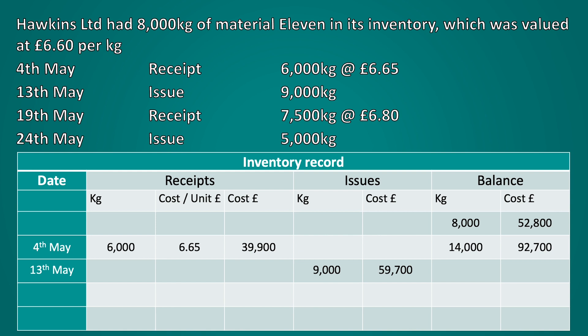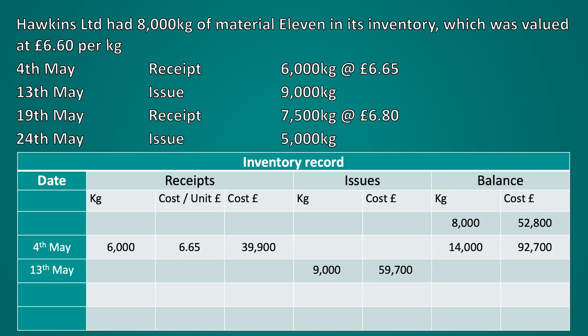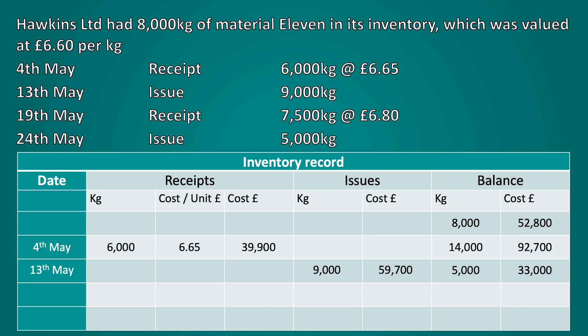We then calculate the remaining balance. Before the issue we had 14,000 kilograms and we've issued 9,000 kilograms, so the remaining balance is 5,000 kilograms. The value of this inventory would be the balance before the issue of £92,700 less the value of the issue of £59,700, giving us a new balance of £33,000.